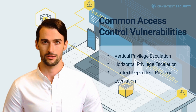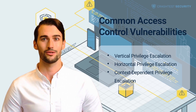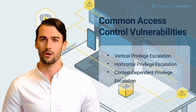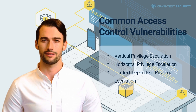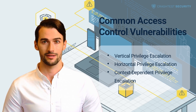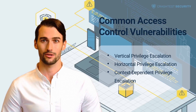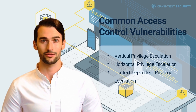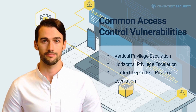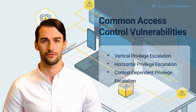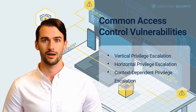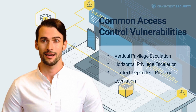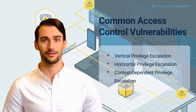Context-dependent privilege escalation: often, attackers compromise privileged users to turn horizontal privilege escalation attacks into vertical privilege escalation. For instance, hackers may use broken horizontal controls to retrieve another user's login credentials. The attackers can then target administrative accounts, which gives them administrative rights to escalate privileges vertically. Some context-dependent privilege escalation attacks include insecure direct object reference, multi-step attacks, attacks on referer-based mechanisms, and attacks on geographical location-based mechanisms.